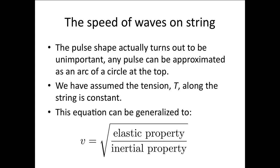We'll see later that this equation can actually be generalized. We'll be seeing it for sound waves. But we can actually generalize it to the velocity equals some elastic property, in this case the tension, over some inertial property, in this case the mass per unit length. For a sound wave, it ends up being the bulk modulus B over the density per unit volume of the material that the wave is traveling through.